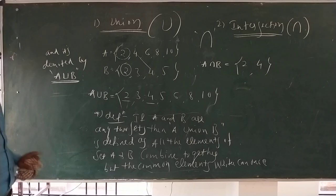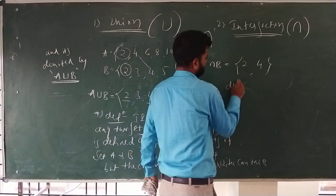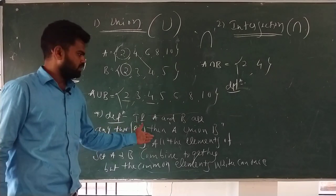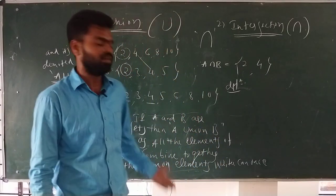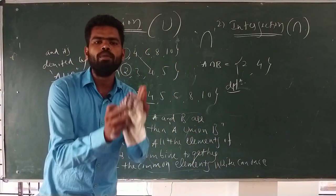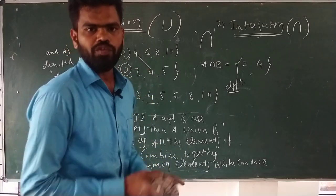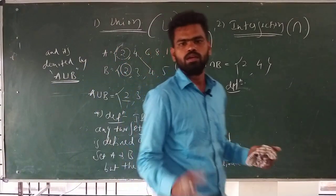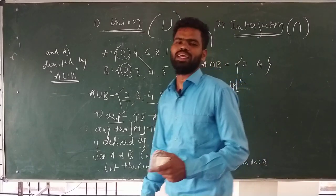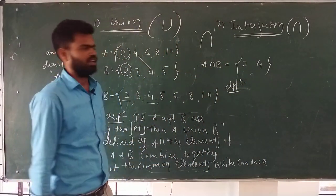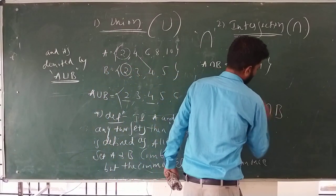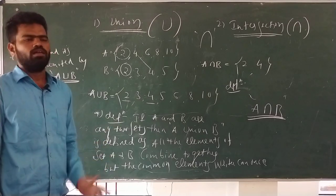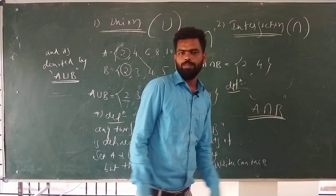Similarly for intersection: if A and B are any two sets, then A ∩ B is defined as the common elements of set A and set B. This is called the intersection. It is denoted by A ∩ B.